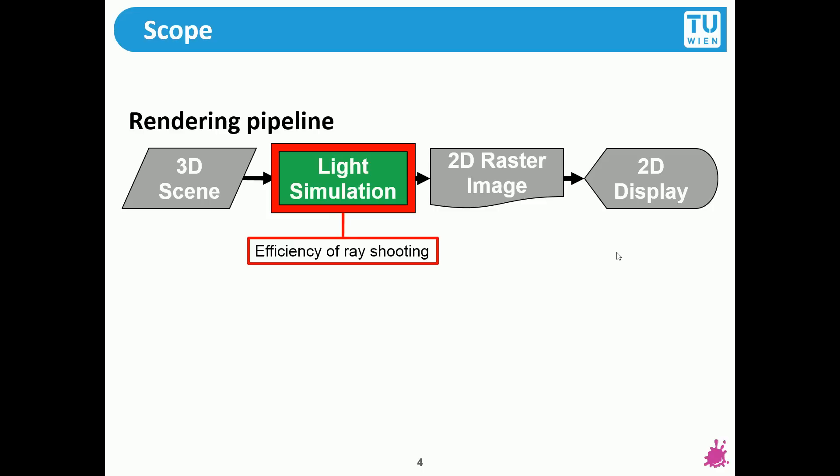Spatial acceleration structures are central to the light simulation because they increase the efficiency of ray shooting. As you heard last time, ray based methodologies from geometric optics are mainly employed to enable photorealistic rendering. In this work you have to shoot a lot of rays, usually in the order of millions to billions. If you can cut down the computational cost of this procedure then you will gain significant speed ups.